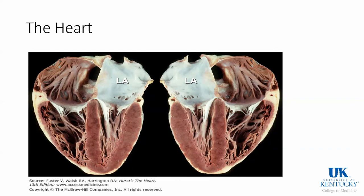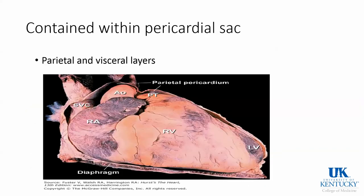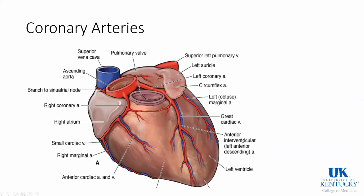Here is a nice image of the heart from a cadaver and you can see the left atrium, right atrium, right ventricle, and left ventricle. The heart is composed of three layers: your epicardium, your myocardium, and your endocardium. The heart is contained within a pericardial sac which has a parietal outer layer and an inner visceral layer.